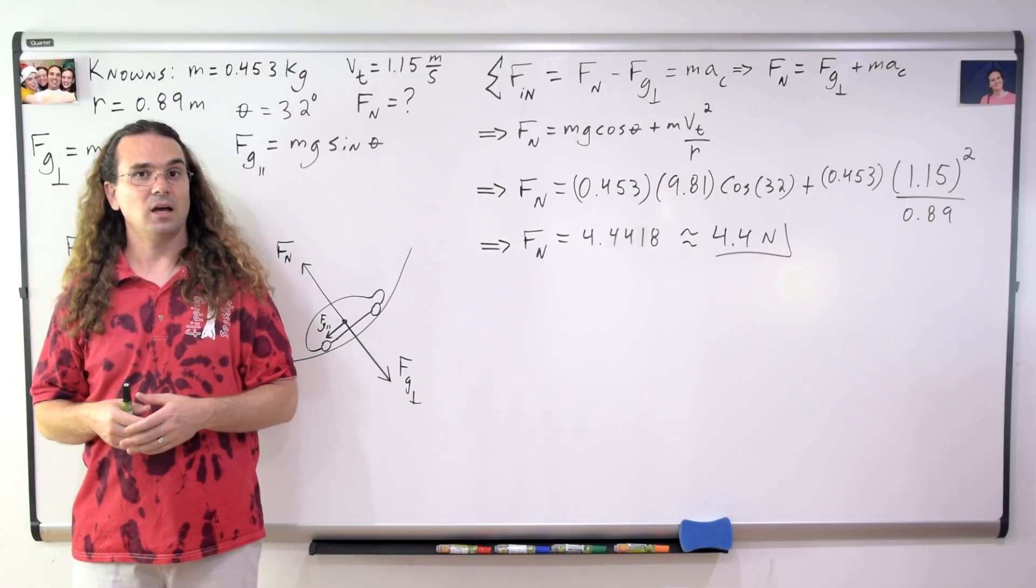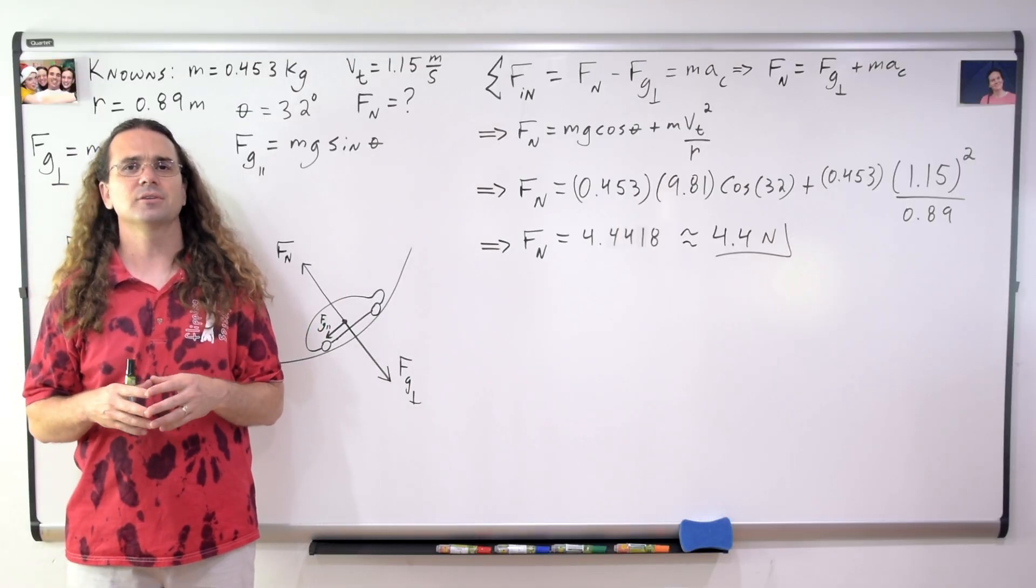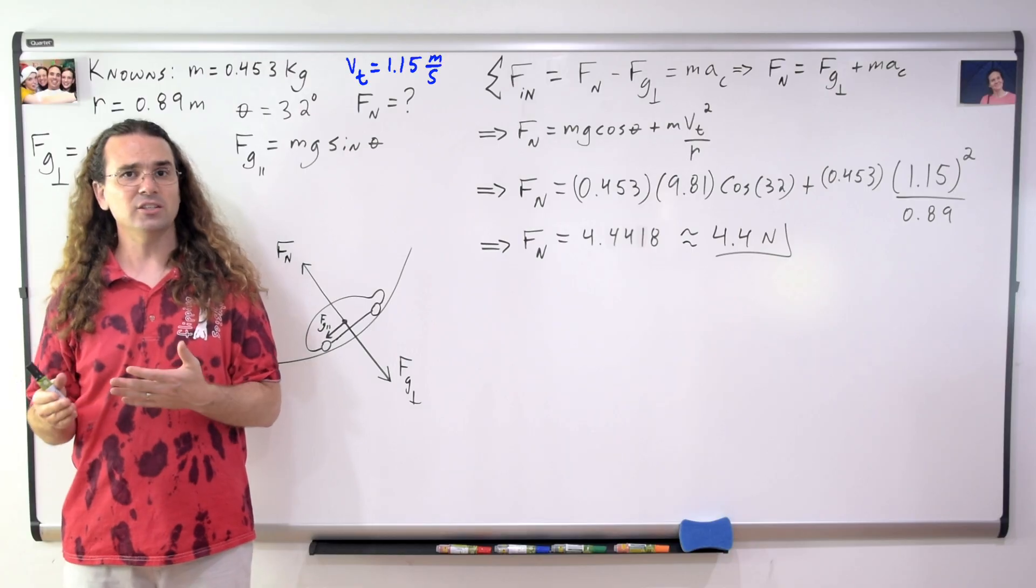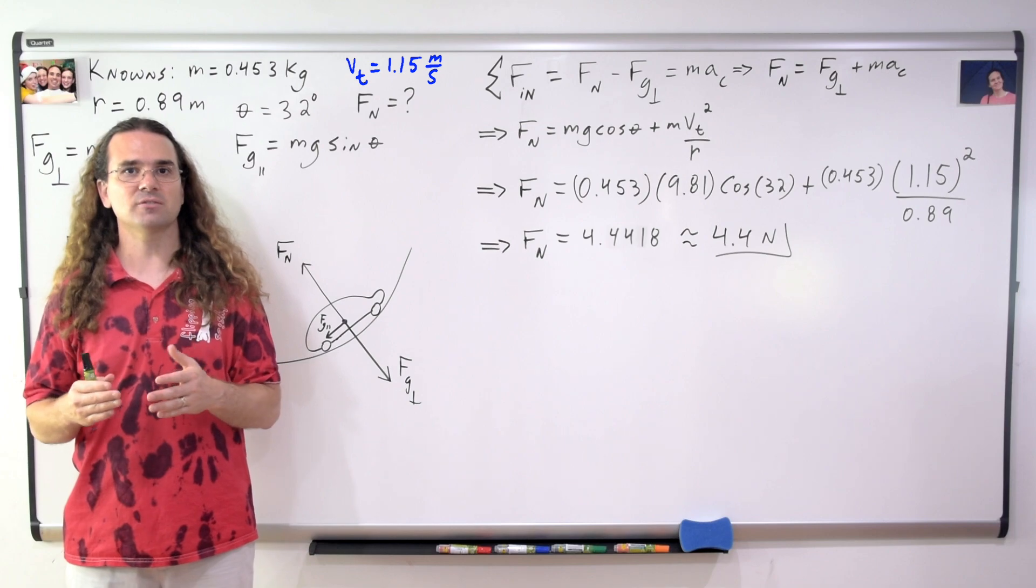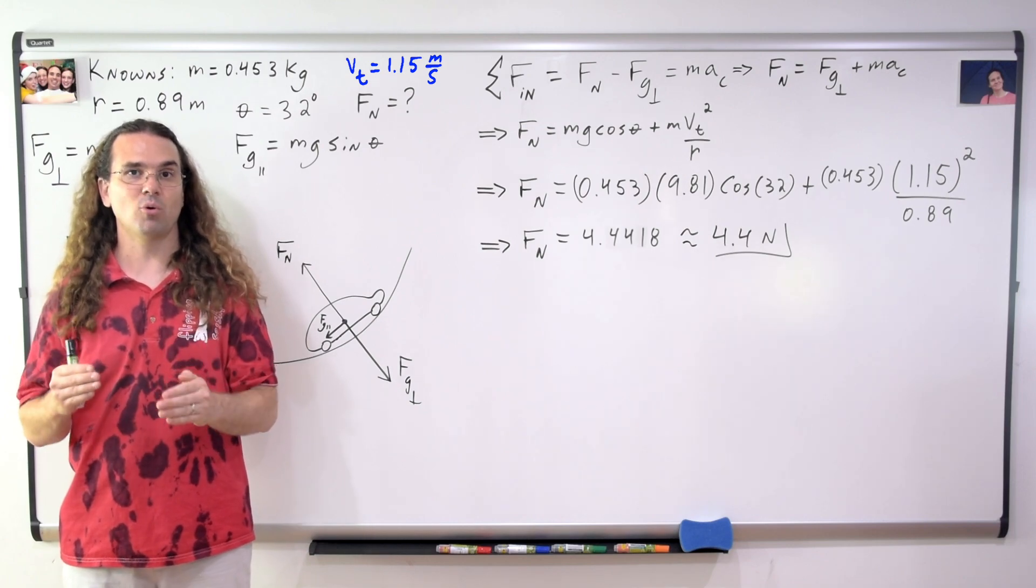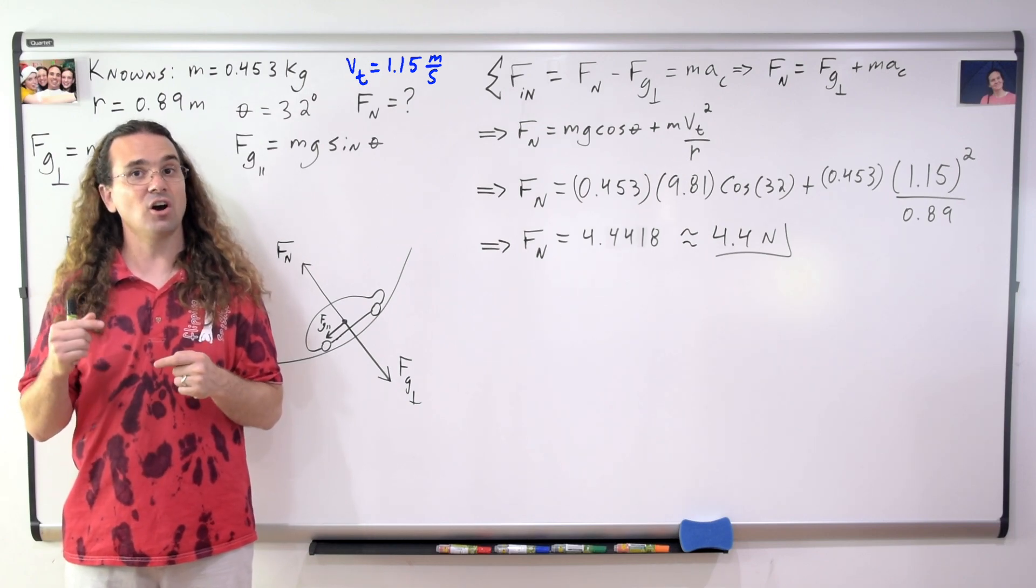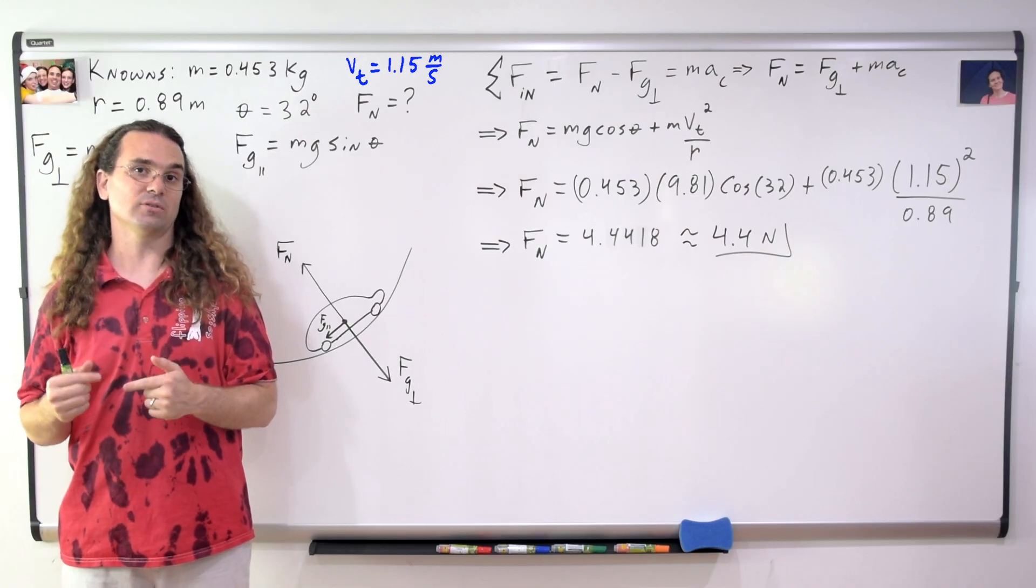Very nice. A couple of things to point out. First, the tangential velocity of the car, 1.15 meters per second, is an instantaneous velocity at a specific point in time because the car slows down as it goes up the hill.